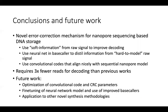For future work, we will look at optimization of convolutional codes and CRC parameters. We are already working on fine-tuning the neural network model — whenever a new base caller does better base calling, you can use it to improve our decoder as well. Finally, we want to apply this to other synthesis methodologies. The general idea is very applicable to a lot of different synthesis methods, including something called enzymatic synthesis, which people are very interested in nowadays.